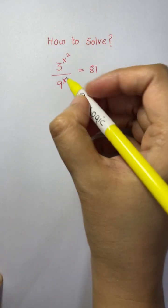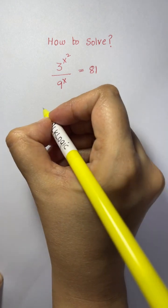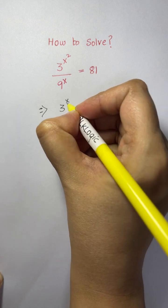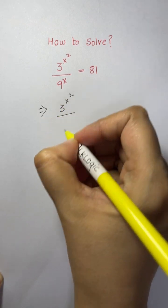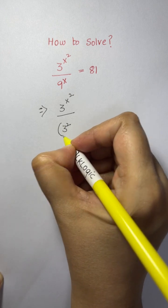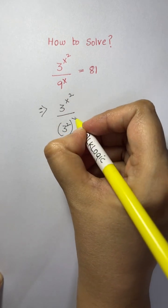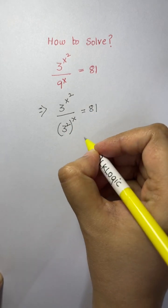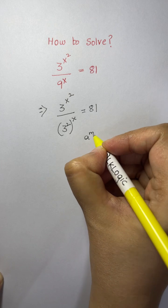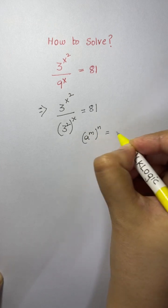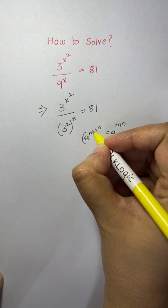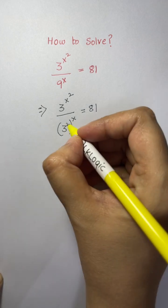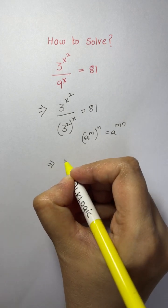First, let us break down 9 as 3 squared. So we're going to write it as 3 to the power of x squared over 3 squared, whole to the power of x, equals 81. Then we apply the law: a to the power of m, whole to the power of n, equals a to the power of m times n. Whenever you have power to power, the powers get multiplied.